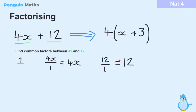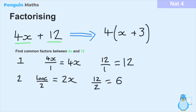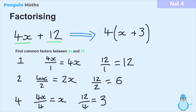The next common factor between 4x and 12 is 2, because 4x divided by 2 gives us 2x and 12 divided by 2 is equal to 6 — so that's another common factor. And the last common factor is 4, because 4x divided by 4 gives us just x, and 12 divided by 4 is equal to 3. So 4x and 12 have common factors of 1, 2, and 4 — the only numbers that divide into both and give whole answers.